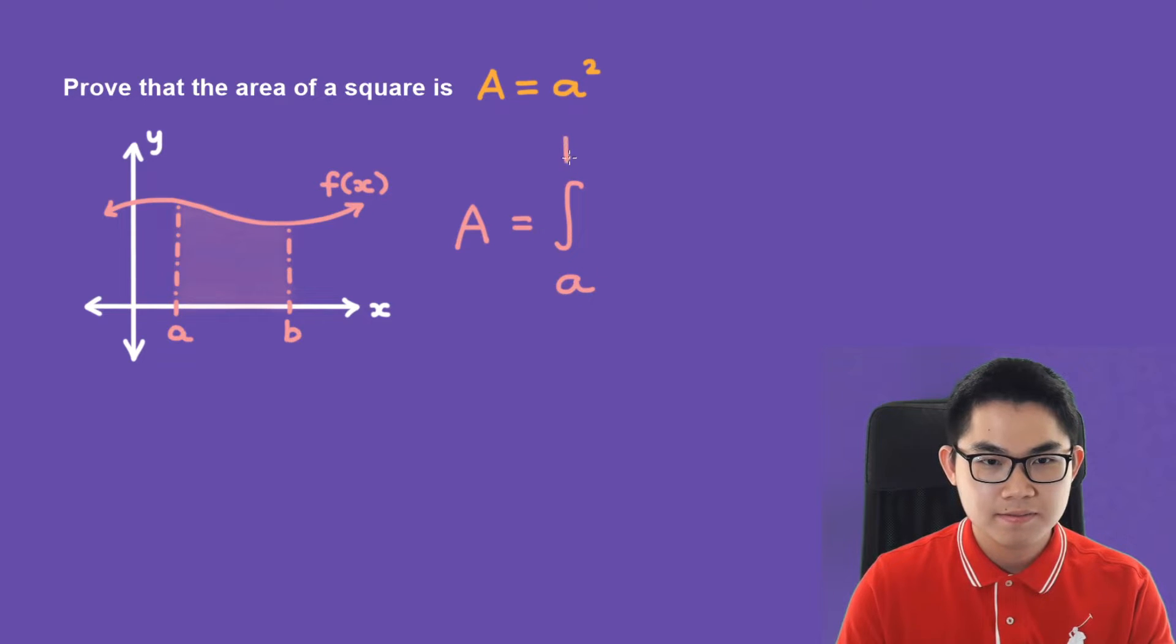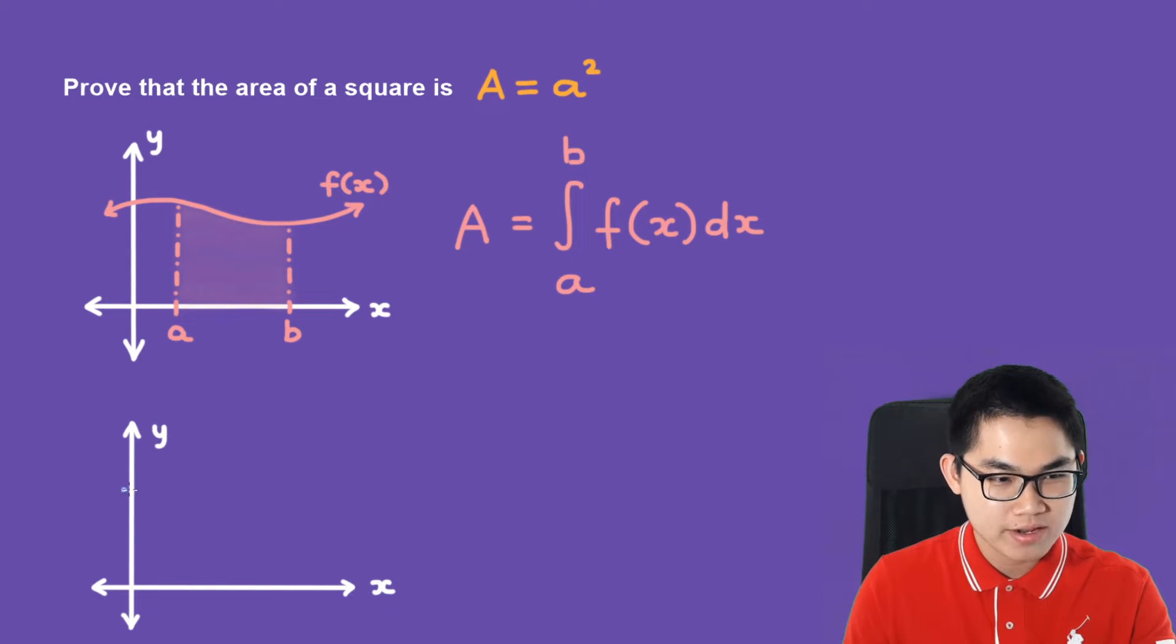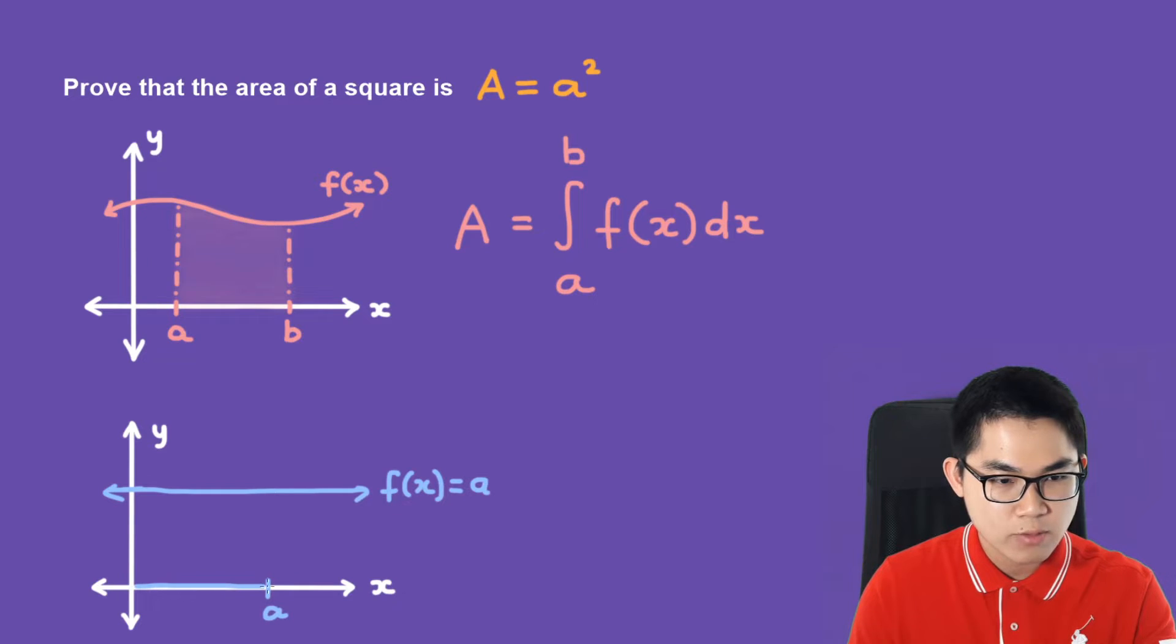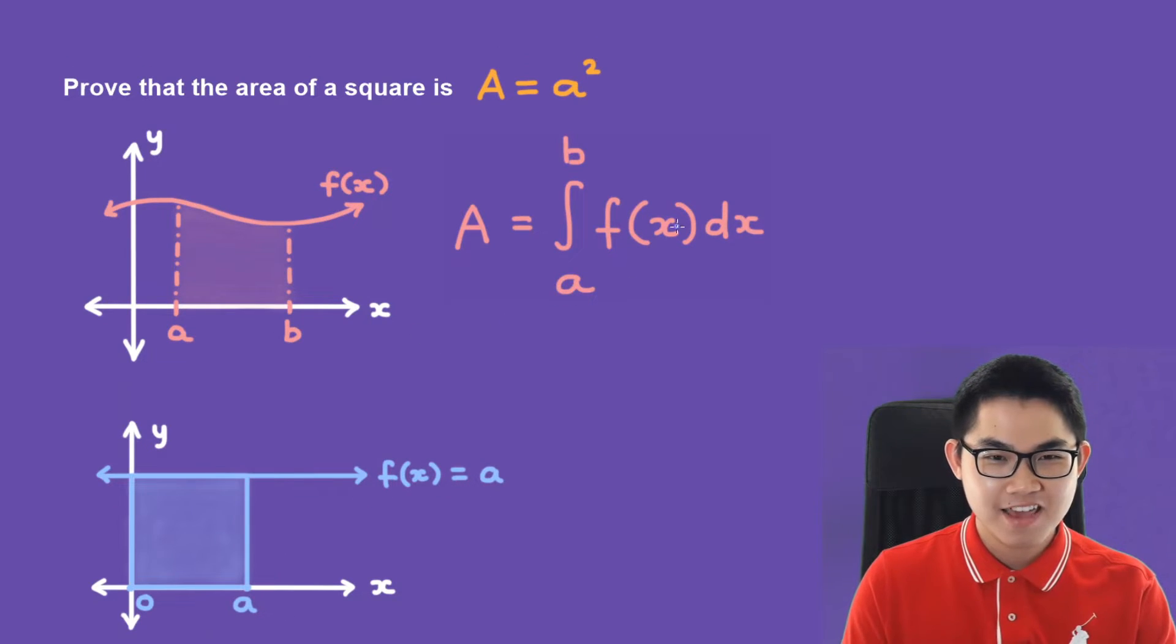Now let's draw our square. Our square has a side length of a and we can represent this with a line where here f of x is equal to a, and then the base is also a. So from here to here, this is a, and then we draw everything together and here is our origin. So now we have our square and we're interested in finding the area.